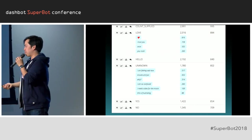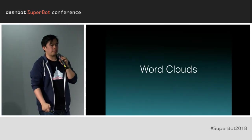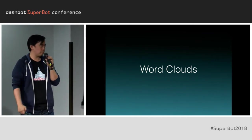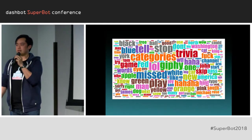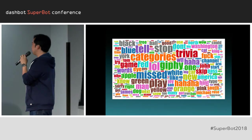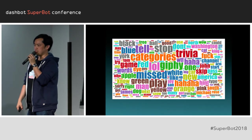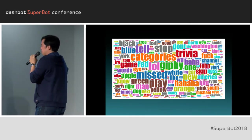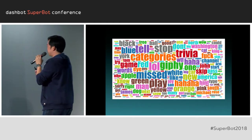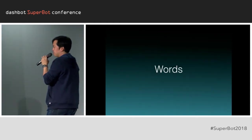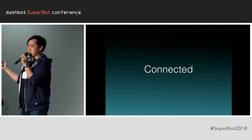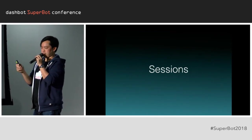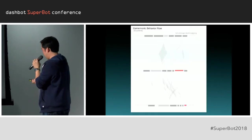Here at DashBot, now that we've processed nearly 30 billion messages, we've been exploring some data science projects. One thing we just launched is word clouds — a visualization of all the words sent to our game bot over the past two years. But of course, words don't just exist in a cloud — they're connected, and when connected they become messages. When messages connect together, they become sessions, which is why we now have a visualization of the behavior flow.